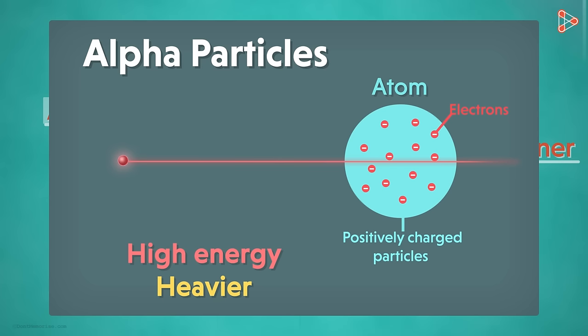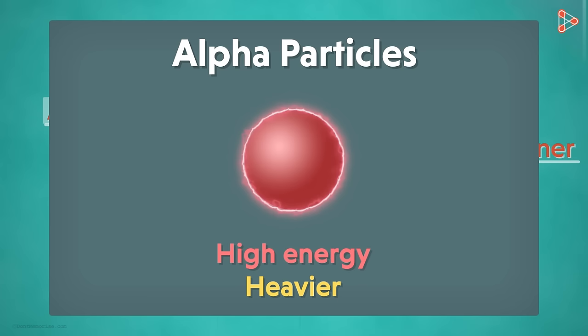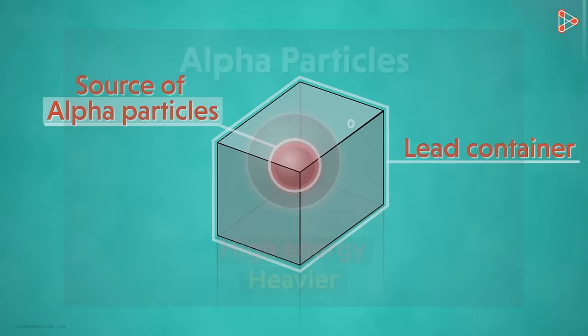This is obvious because the heavier particles will pierce through the lighter pudding structure of the atom and pass through it. This is what Rutherford thought. For this reason, their greater mass and energy compared to the protons made him choose alpha particles for the experiment.